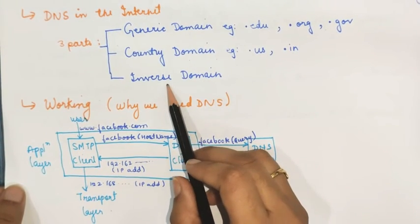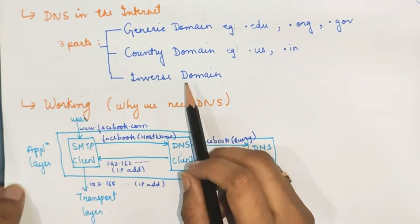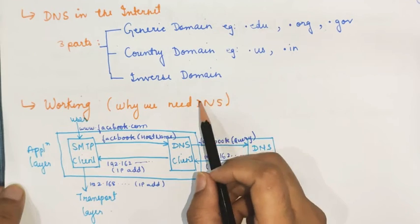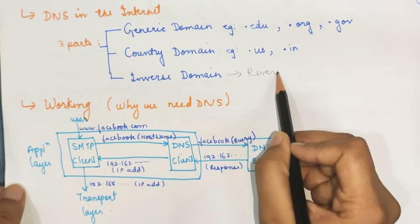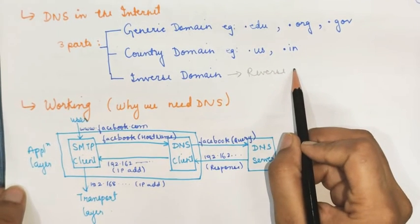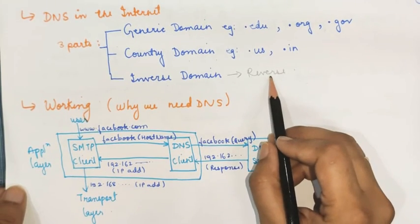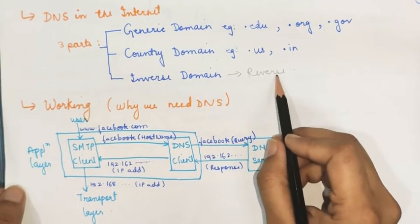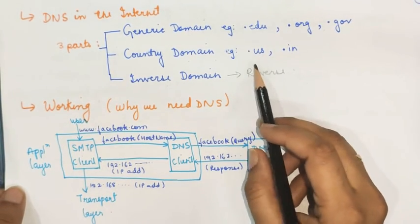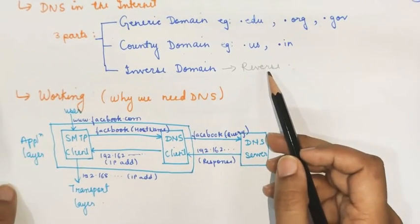The last category is inverse domain. It is used to map an IP address to a name. Generally what we do is map a name to an address, but here we are going to reverse the procedure — we map an IP address to a domain name. Now that you know all these things about DNS, we will see how the domain name system actually works.